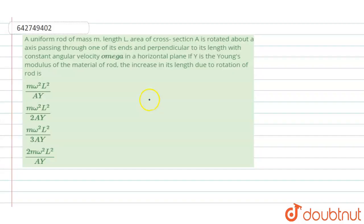Hello, here's a question. A uniform rod of mass M, length L, area of cross section A is rotated about an axis passing through one of its ends and perpendicular to its length with constant angular velocity omega in a horizontal plane. If Y is the Young's modulus of the material of the rod, find the increase in length due to rotation of the rod.